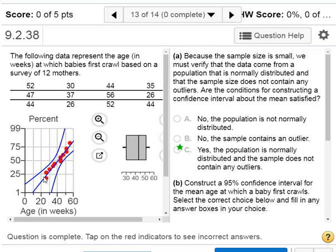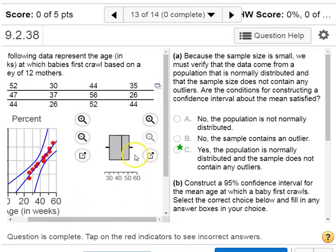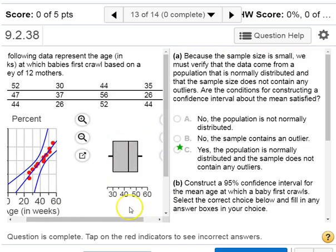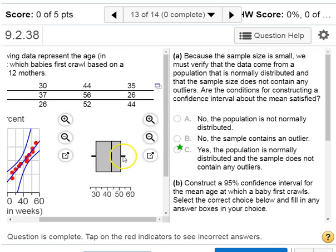And then for outliers, we look at this box and whisker plot. And as long as the whiskers aren't really long on either end, like really sticking out far...